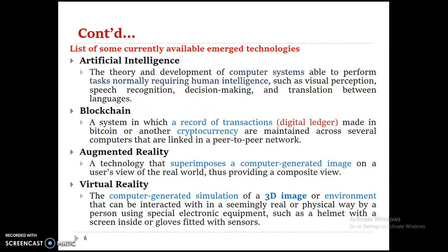This is a list of currently available emerging technologies. The first one is Artificial Intelligence. AI is the theory and development of computer systems able to perform tasks normally requiring human intelligence. The term is derived from two words: 'artificial,' meaning human-made, and 'intelligence,' meaning the ability to think. So any machine or robot that has its own intelligence is what we call artificial intelligence.